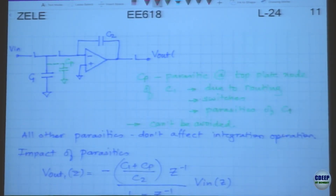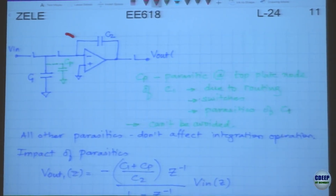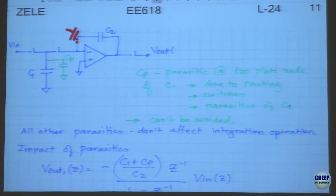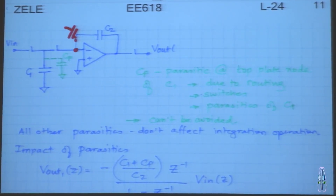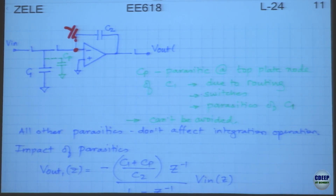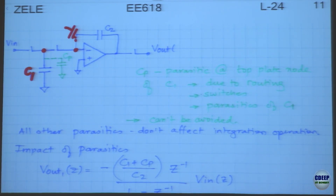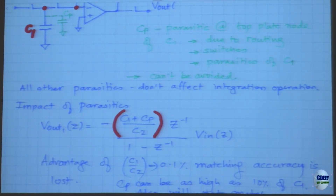If you have any capacitor at the virtual ground node, it does not contribute to the integration time constant because that node always stays at virtual ground during phi1 or phi2. However, at the junction node of the two switches, you will have parasitic capacitance Cp, which looks just like C1. You cannot distinguish between C1 and Cp, so in your expression you will get C1 plus Cp.